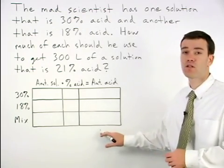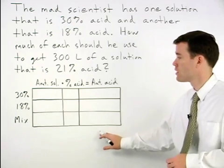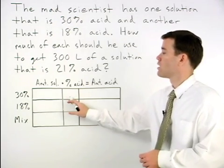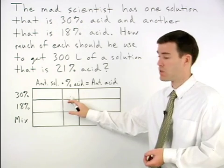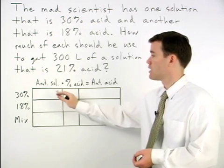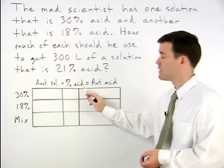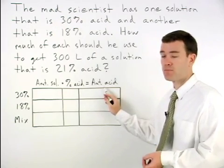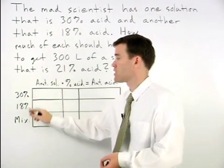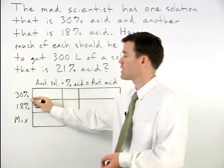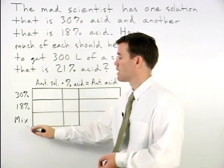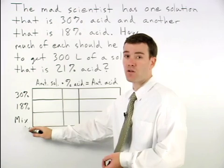Well, let's start things off by setting up a chart. Across the top we have our mixture formula, which in this case is amount of solution times percent acid equals amount of acid. Down the left side we have our two different types of solutions that add to our final mixture.